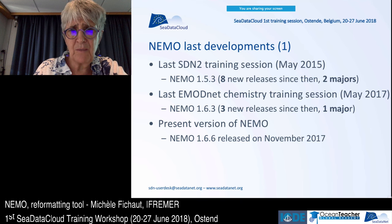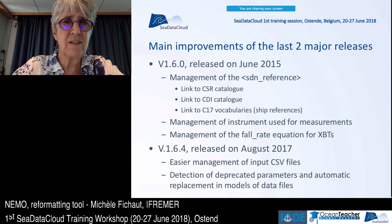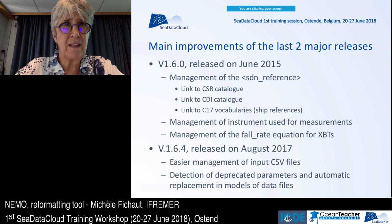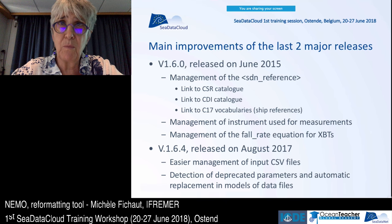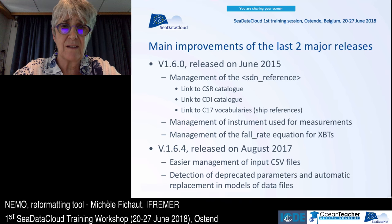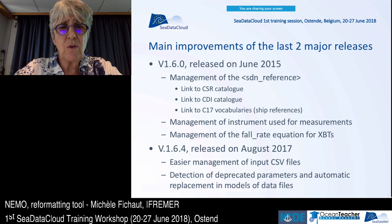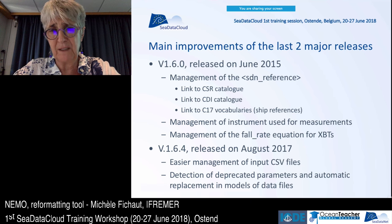The present version of NEMO was delivered more than six months ago, last November. Since the last training course, the two major releases are listed on this slide. The first, released in June three years ago, introduced management of SDN reference tags — links to the CSR catalog, the CDI catalog, and the C17 vocabulary for ship references. This was a requirement from the Copernicus consortium, who need ship information in data files, not only in metadata. That version also introduced management of instruments used for measurements and the fall-rate equation for XBTs.